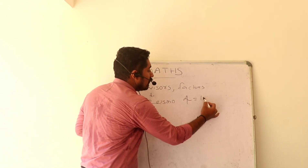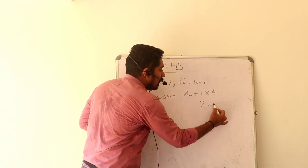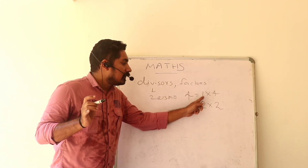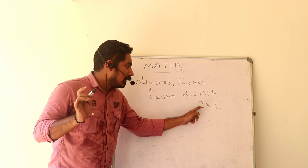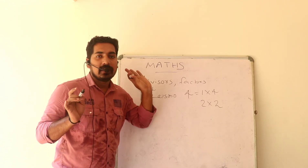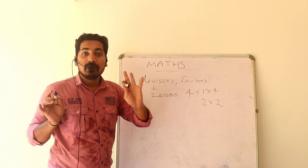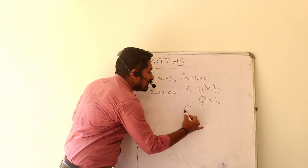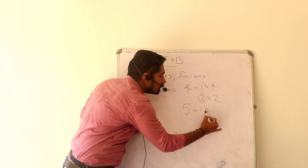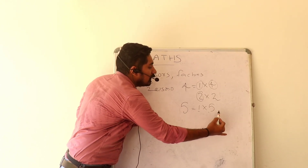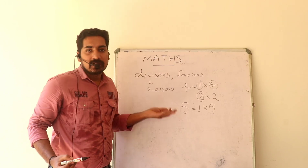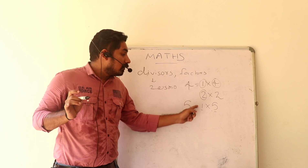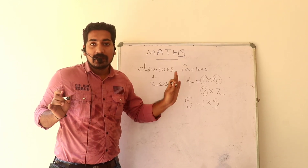How do divisors work? For example, with 4: 1, 2, and then 4 — those are the divisors. That's now 5 and 4. We can cut 1 into 5, so add 1 and 5.